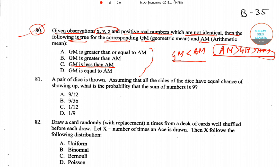Now we'll go to question number 81. In question 81 it is given: a pair of dice is thrown. Assuming that all the sides of the dice have equal chance of showing up, what is the probability that the sum of the numbers is 9?